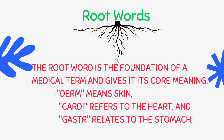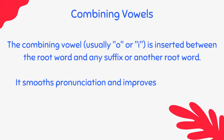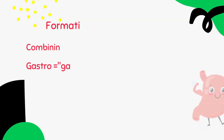For instance, derm means skin, cardi refers to the heart, and gaster relates to the stomach. The combining vowel, usually O or I, is inserted between the root word and any suffix or another root word. It smooths pronunciation and improves the flow of the medical term.